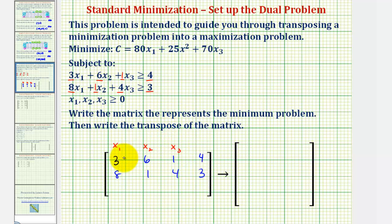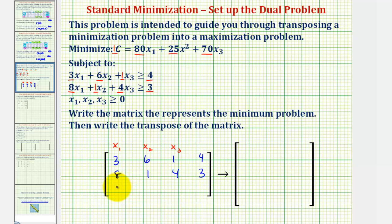For the objective function row, we want the coefficients of the x terms first, then the coefficient of c. So the third row is eighty, twenty-five, seventy, and then one for the coefficient of c. So the third row is: eighty, twenty-five, seventy, one.